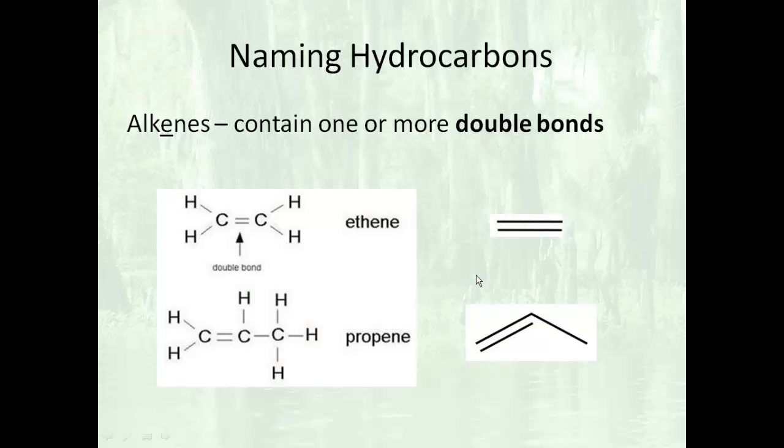If the hydrocarbon chain contains double bonds, as it might have some singles in there also, then the ending is switched from A-N-E to E-N-E. Ethane, which is a colorless, odorless gas, if you switch it so it had a double bond, now becomes ethene, a gas with a faint, sweet, and musty odor.